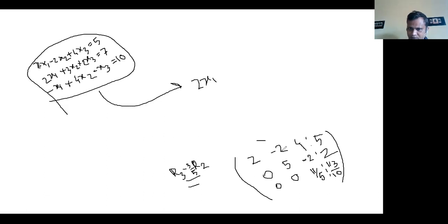2x1 minus 2x2 plus 4x3 minus 2x2 plus 4x3 equals to 5. Next one is 5x2 minus 2x3 minus 2x3 minus 2x3 equals to 2.